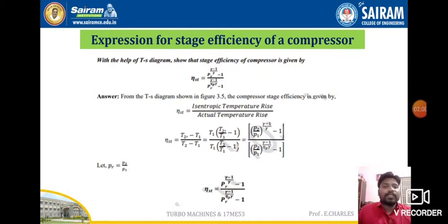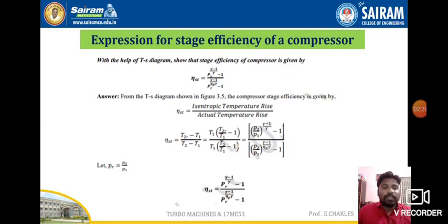This can be written as dw_i divided by dw, which equals dh-naught-i divided by dh-naught. Here, dw is the change in work done, dh-naught is the change in enthalpy, and dt-naught is the change in temperature. For any ideal compressor, the isentropic relation gives: t-naught-i equals p-naught-i raised to the power of (gamma minus 1) divided by gamma, into a constant.